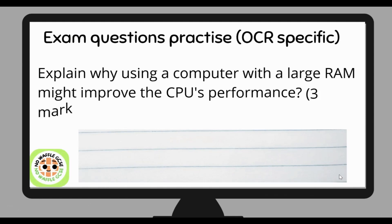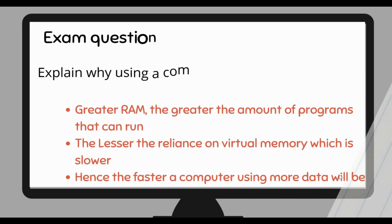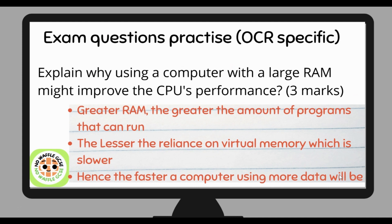Now let's do some exam question practice. Explain why using a computer with a large random access memory might improve the CPU's performance. This is three marks. Let's go through the answer. The greater the RAM, the greater the amount of programs that can be run. Therefore, the lesser the reliance on virtual memory, which is much slower. Hence, the faster a computer using more data will be. Because there's more RAM, more programs can be held, and there is less reliance on virtual memory, because there is less chance the RAM will be full.